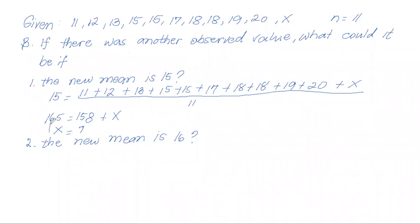The sum is 158, so 158 plus x equals 165, meaning x must be 7. The new observed value must be 7 for us to have a mean of 15.